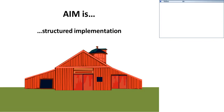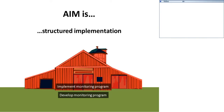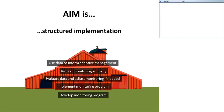A final principle of AIM is to be thoughtful — like constructing a building, start from a strong foundation. Really figure out what your questions are and develop your monitoring program, then implement it, evaluate the data you've collected, and adjust your monitoring if needed. Repeat the monitoring annually in order to continue gathering data, and use that data to inform adaptive management. Most of the case studies today focus on this 'using the data' piece.